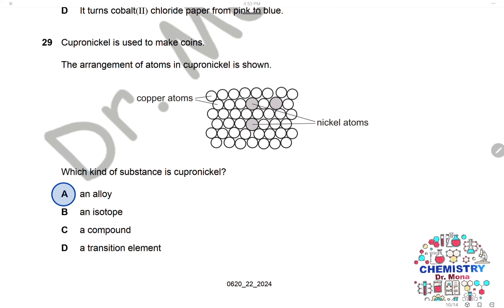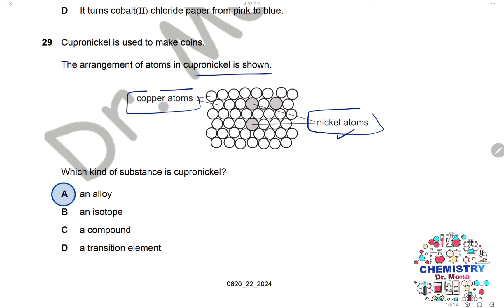Question 29: Copper-nickel is used to make coins. The arrangement shows copper atoms and nickel atoms mixed together, with nickel present in a smaller percentage. A mixture of two metals together is called an alloy. The answer is A.